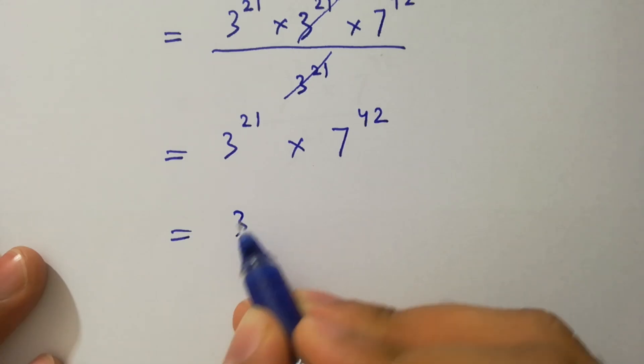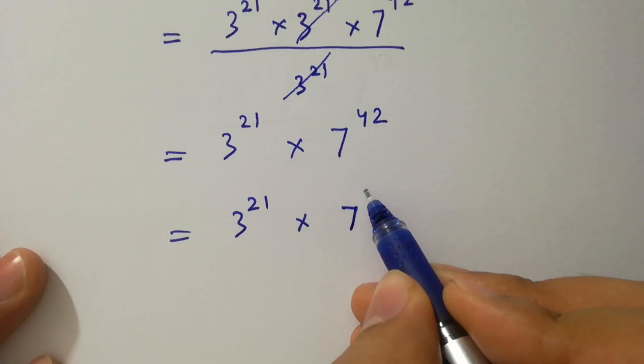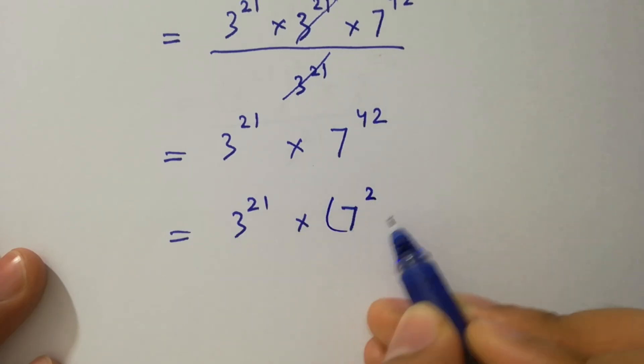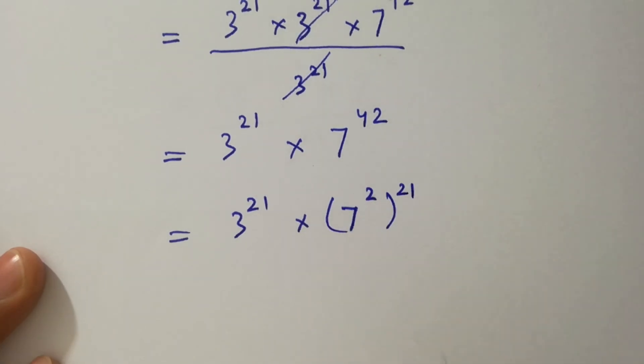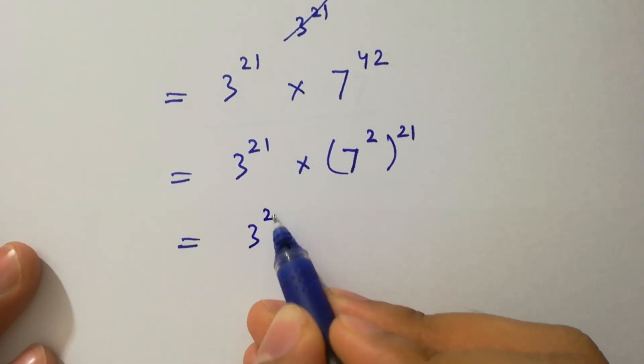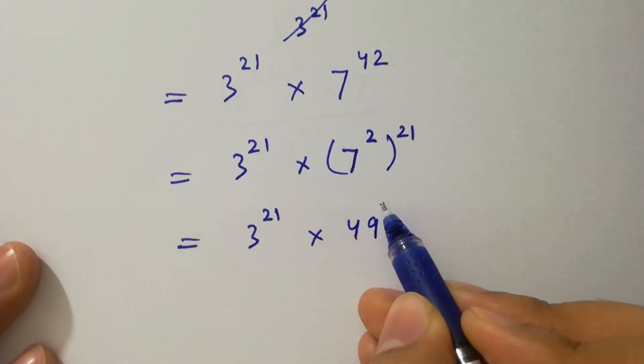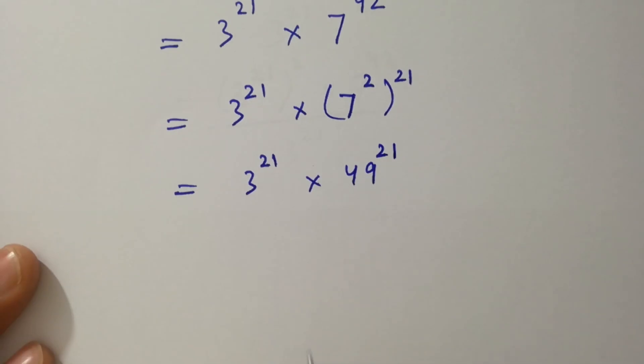Here we have 3 to the power 21 as it is. Next, this is 7 to the power 21 times 7 to the power 21 times 7 to the power 21 as it is.